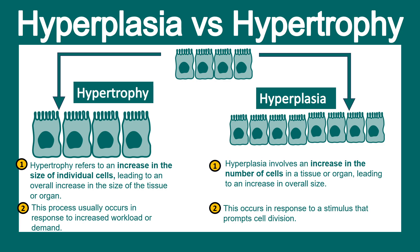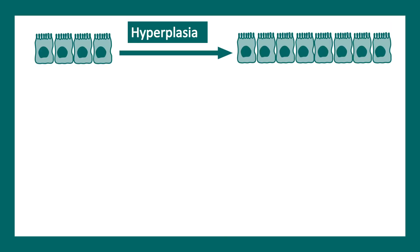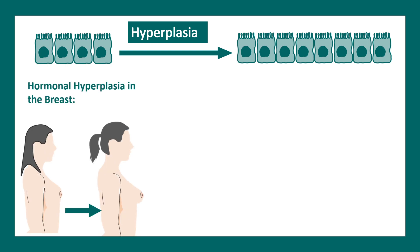Let's understand the process of hyperplasia in a bit more detail. Hyperplasia simply means an increase in the number of cells. This increase happens because of enhanced cell division — programs are activated that lead to cell division. That is the essence of hyperplasia.